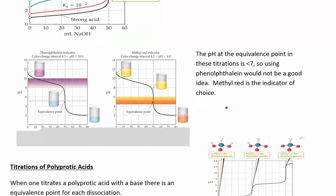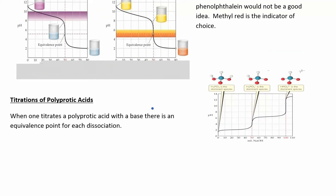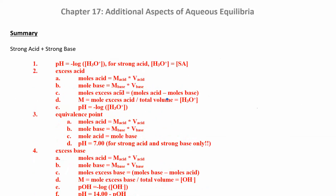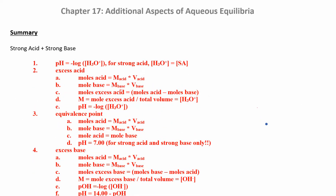You can also titrate a polyprotic acid. If you have more than one proton, you can pull off one proton at a time and neutralize one at a time. You'll have multiple equivalence points, which makes it a little more complicated, and you have a different-looking graph.